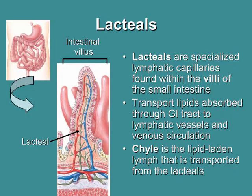Lacteals are specialized lymphatic capillaries found within the small intestine. Within the small intestine we have small finger-like projections called villi, which are responsible for absorbing nutrients from food and putting them in the bloodstream. Things like proteins and carbohydrates are absorbed through the villus epithelium and enter directly into blood capillaries. Unfortunately, lipids or fats are usually too large to move directly into blood capillaries, so instead they're absorbed by specialized lymphatic capillaries called lacteals. The lymph laden with this fat is called chyle — a white and opaque fluid. This chyle is lipid-laden lymph transported from the lacteals into other lymphatic vessels and eventually into venous circulation.